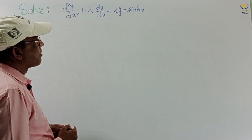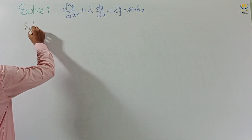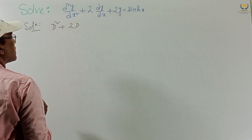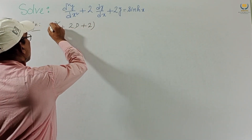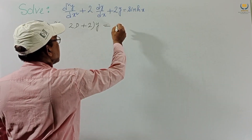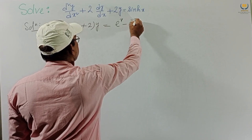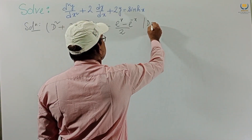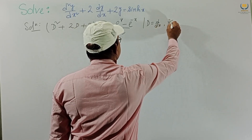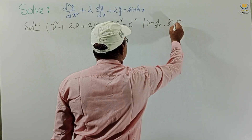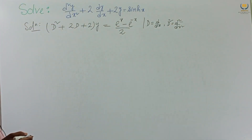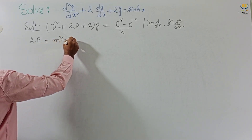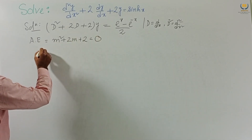Let us consider Problem 1: solve d²y/dx² + 2dy/dx + 2y = sinh(x). We write D² + 2D + 2 applied to y equals sinh(x), where sinh(x) = (e^x - e^(-x))/2, D means d/dx, and D² means d²/dx². Now the auxiliary equation is m² + 2m + 2 = 0.